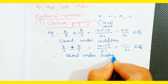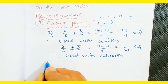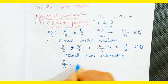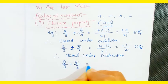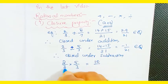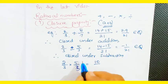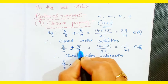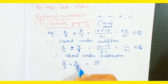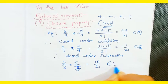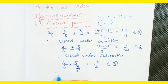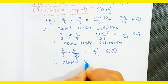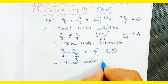Next, multiplication: suppose 2/3 into 5/7. We get 2 × 5 = 10 and 3 × 7 = 21, so 10/21. This belongs to rational numbers. Therefore, rational numbers are closed under multiplication.